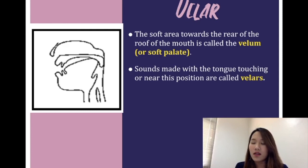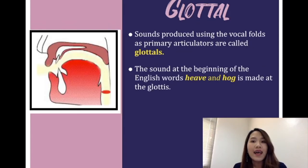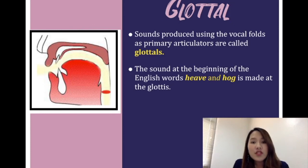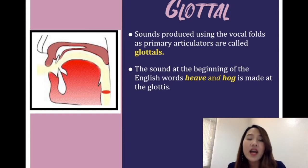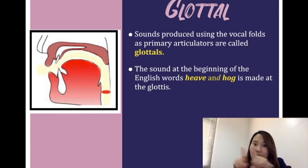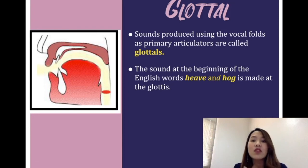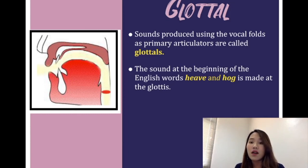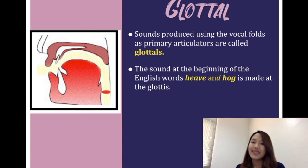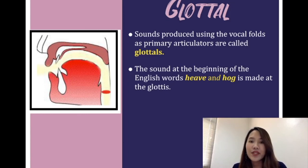The next place of articulation found in English is glottal. Glottal sounds are produced by using the vocal folds — the two folds in our glottis are the articulators called glottal. The sound found in English that uses this area to make a consonant sound is /h/ — for example /h/ in 'heave' and 'hawk.' So that's all for the place of articulation. In the next video, I'm going to talk about the manner of articulation, so please follow.